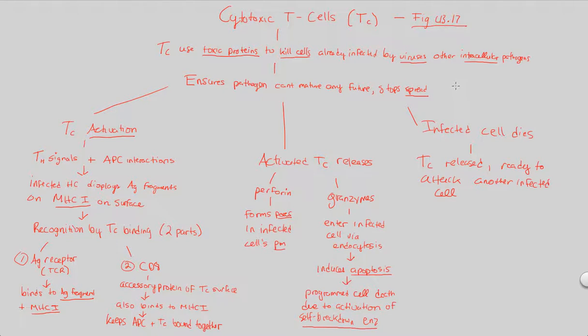That covers our look at cytotoxic T-cells. Be sure to look at figure 43.17 to see a visual representation of how this killing action takes place. Next, we're going to shift gears and look at B cells and how humoral responses work.